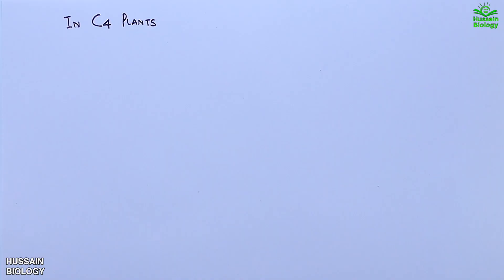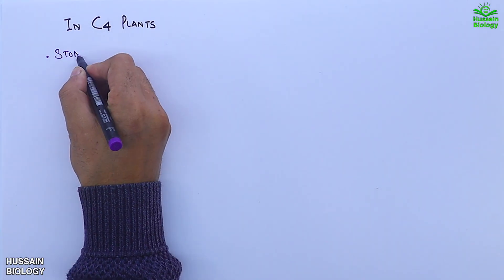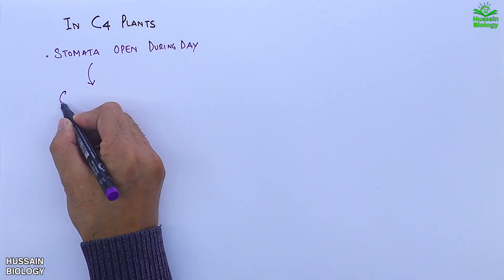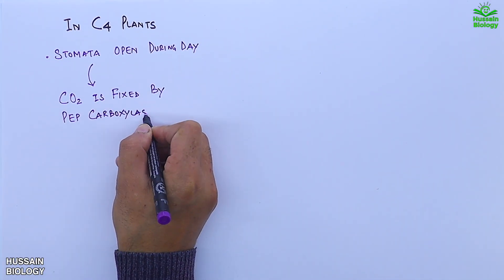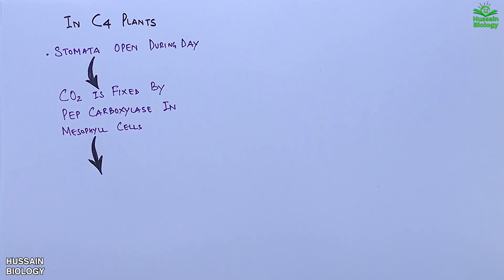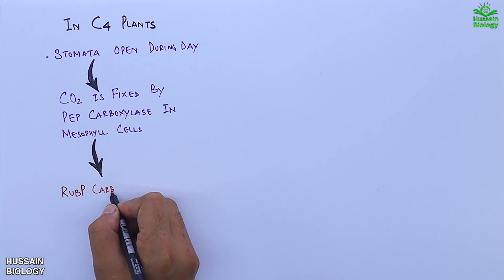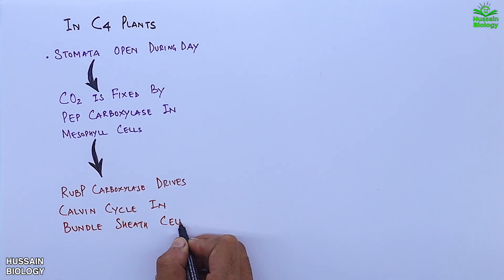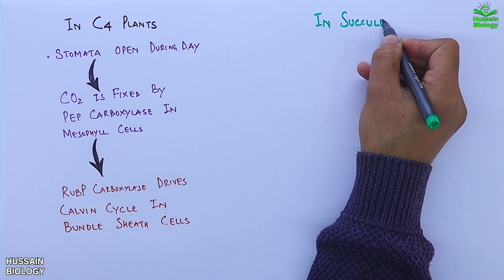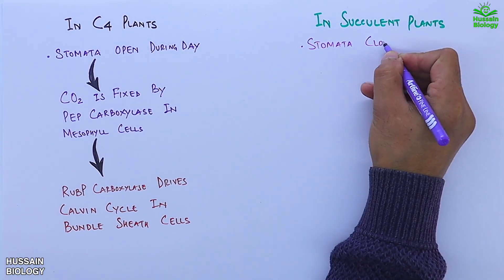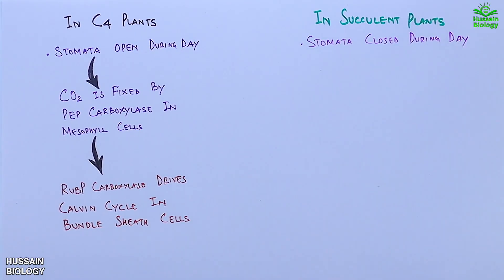Before getting to the mechanism of this pathway, let's first see the normal pathway in C4 plants, where stomata open during the day, CO2 is fixed by PEP carboxylase in mesophyll cells, and then RuBP carboxylase drives the Calvin cycle in bundle sheath cells.